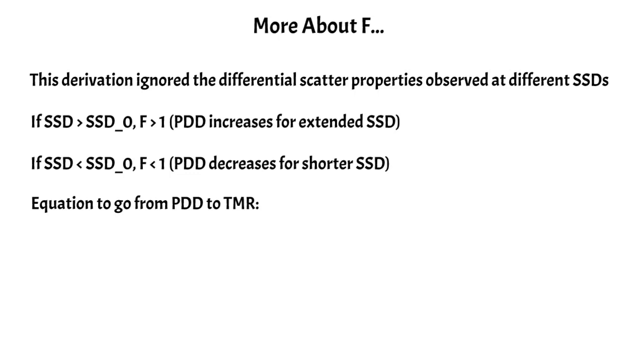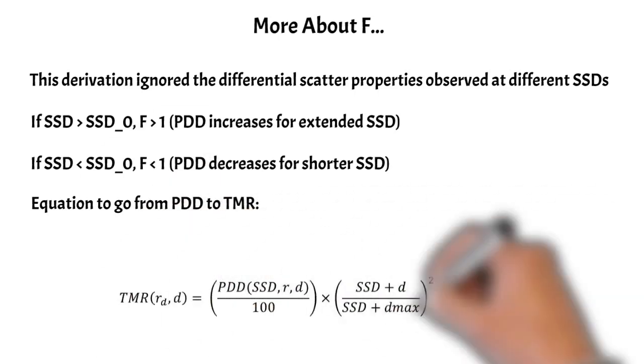In addition, I also mentioned that we can convert the PDD to the TMR using the Maynard F-factor, and that's shown here. So this middle term here is actually part of the Maynard F-factor, but when you actually go from PDD to TMR, you need to do another inverse square correction. And so part of it actually ends up canceling out, so you're only left with part of the Maynard F-factor here. And the TMR is also a situation where you can't ignore that differential scatter, so you also see the phantom scatter factors in here as well. But this is the equation that you can use to go from PDD to a TMR.